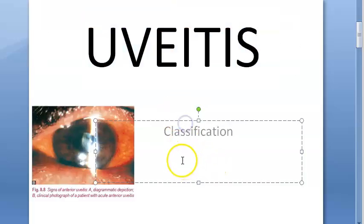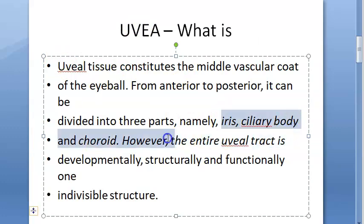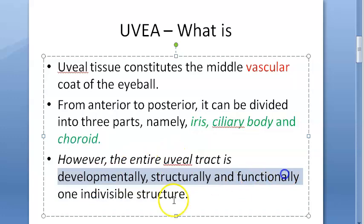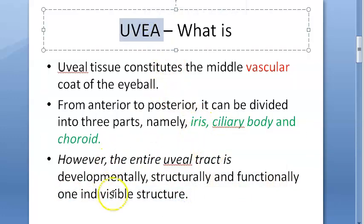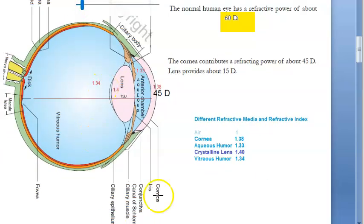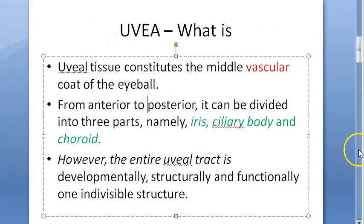In this video, let us look at the classification of uveitis. First of all, what is uvea? Uvea is basically iris, ciliary body, and choroid put together. These are vascular and developmentally a single unit — the entire uveal tract. Developmentally, structurally, and functionally they are one indivisible structure. Looking at the image: iris, ciliary body, and the choroid — the choroid is behind the retina, shown in orange. So uvea is the middle vascular layer.